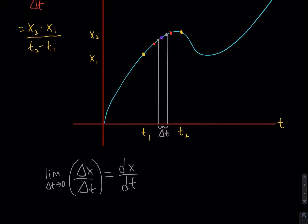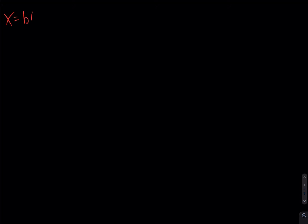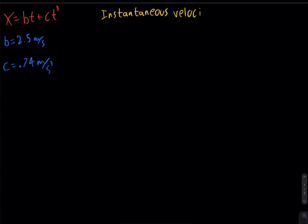Let's do an actual example with a function. Say I give you the position function of some particle: its position is given by a constant b times t plus a constant c times t cubed. I'll give you the values: b is 2.5 meters per second, and c is 0.74 meters per second cubed. We want to know the instantaneous velocity at exactly t = 2 seconds.